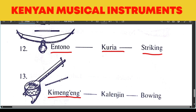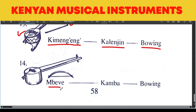We have Kimengeng, another instrument from the Karangin, played by bowing using the raf stick. This is the small raf stick used to play it. Then we have Mbeve from Kamba, played by bowing. So these are our various instruments that we have tried to look at. We'll look at more so we'll be able to understand them better. We've come to the end of our lesson. Thank you.